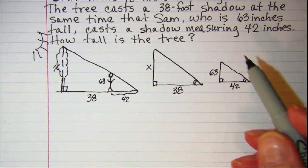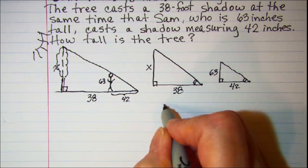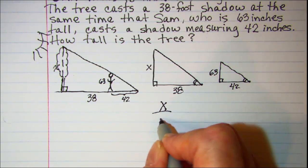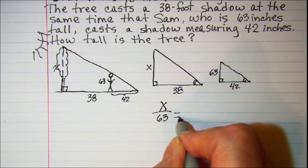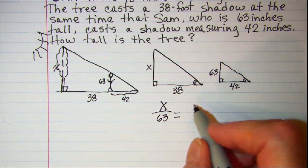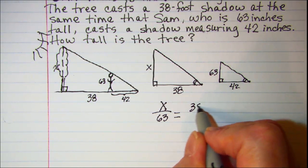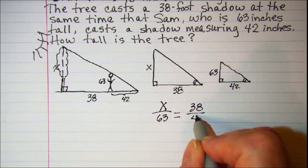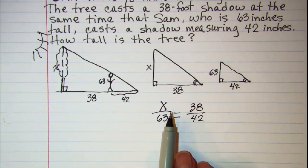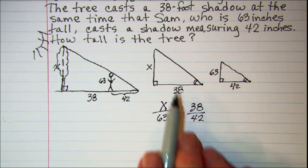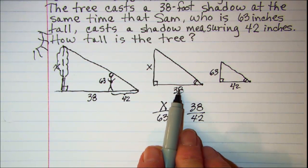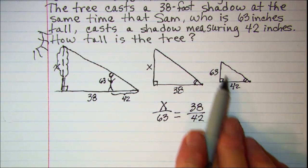So we can set up the proportion X is to 63 as 38 is to 42. Now you don't have to set up your proportion this way. You could do X is to 38 as 63 is to 42.